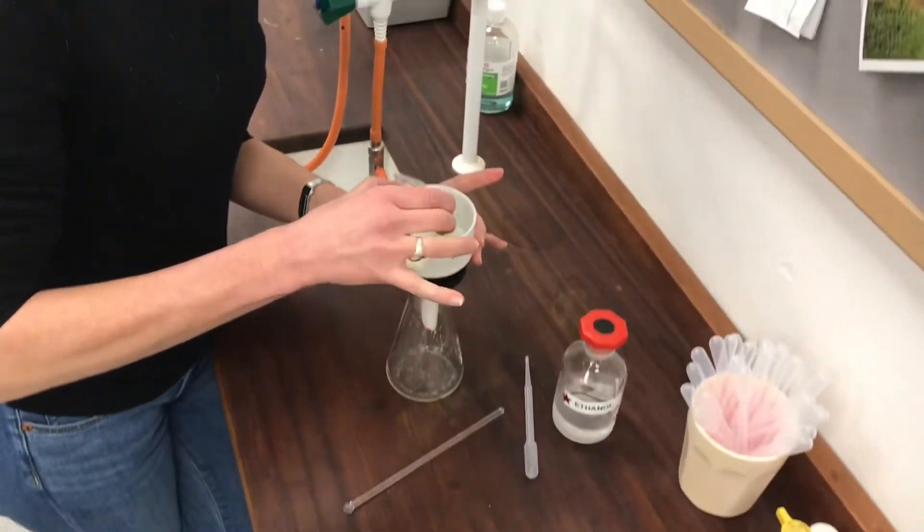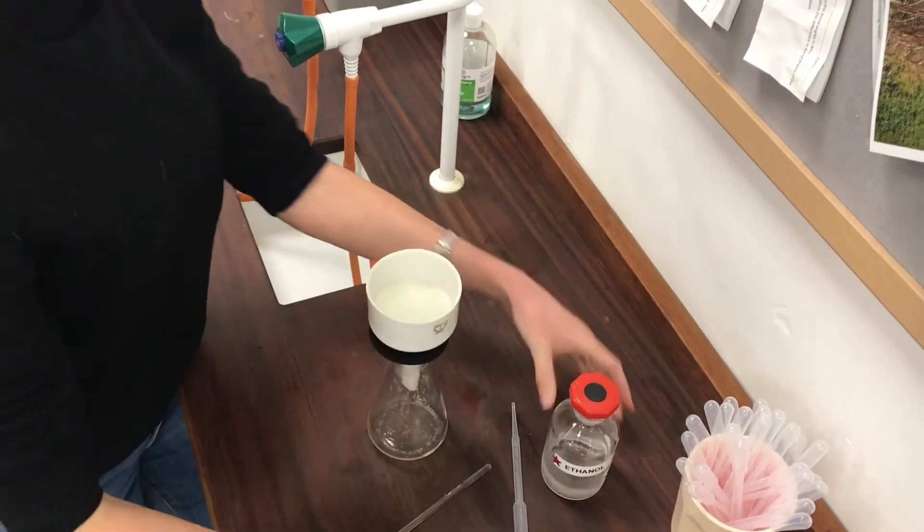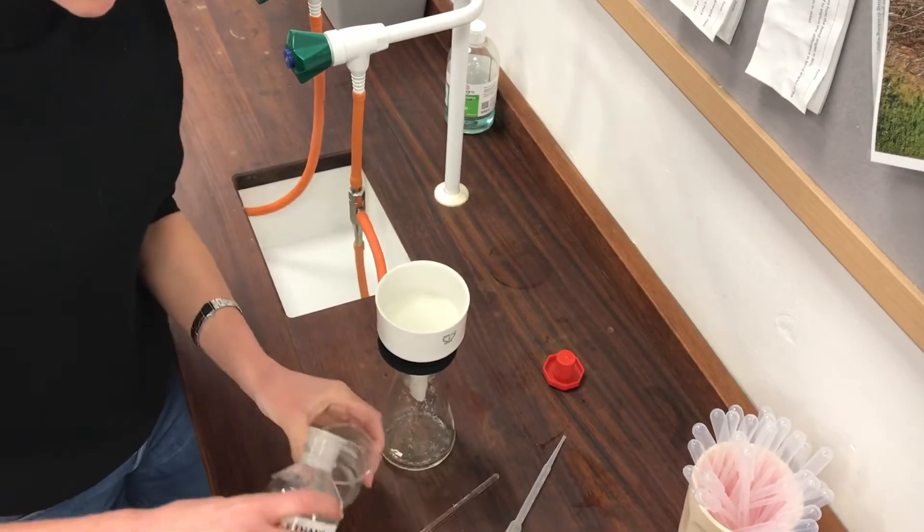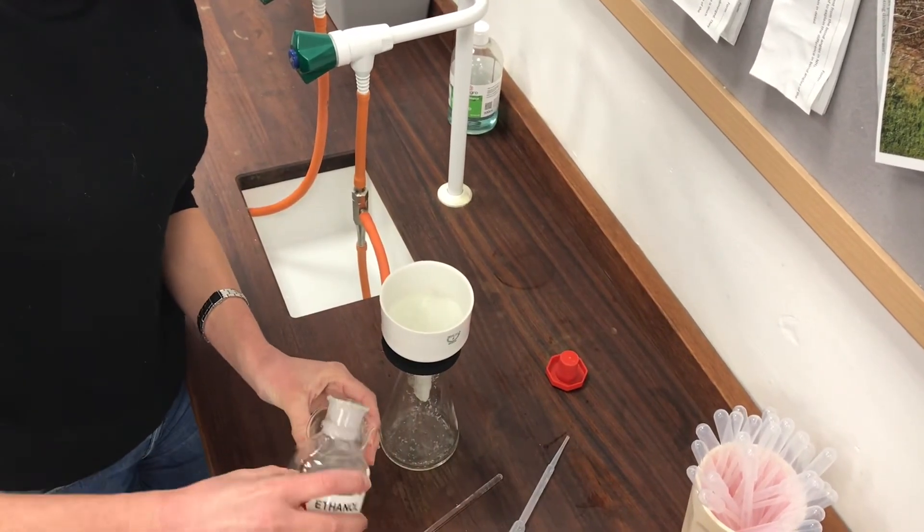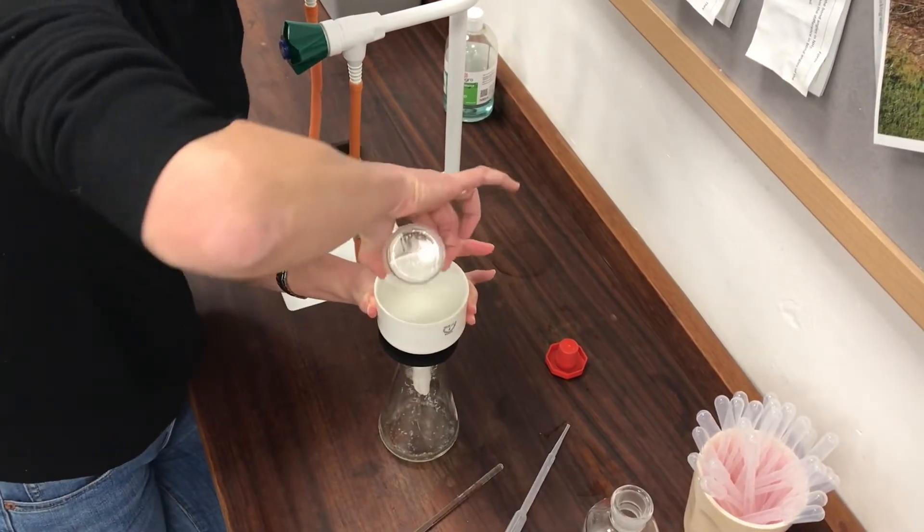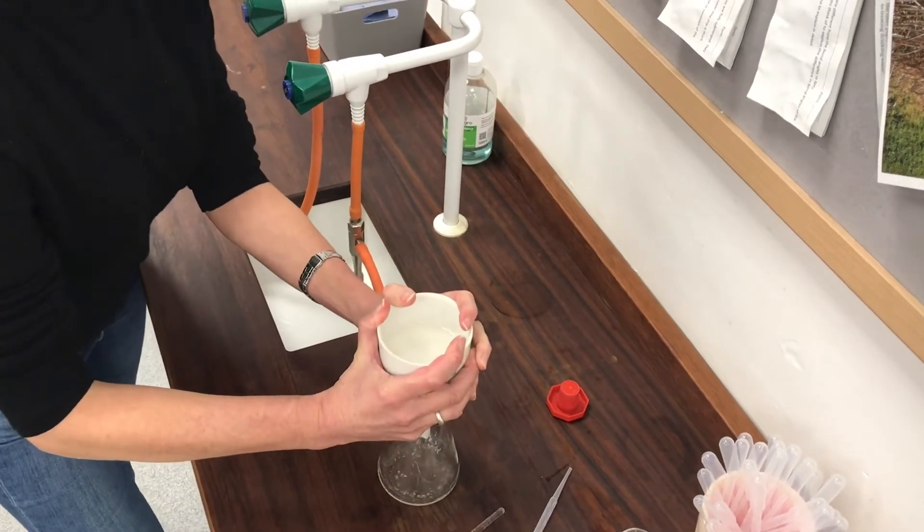Here we go. I'll use a little bit of the ice cold ethanol to swill out my beaker. Pull the funnel down to get a good suction on it.